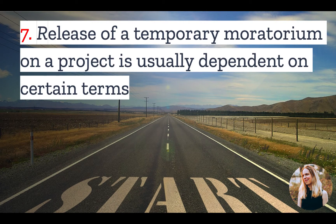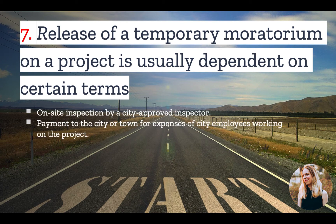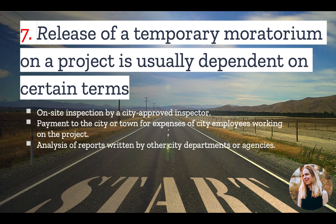Number seven: the release of a temporary moratorium on a project is usually dependent on certain terms. An inspection is usually required by a city-approved inspector to verify that whatever concern initiated the moratorium has been resolved. There may also be payment required to the city for expenses incurred while city employees worked on the project, and an analysis or reports written to other city departments explaining why construction should commence. If fault is found with the contractor or developer, there could also be a fine imposed.